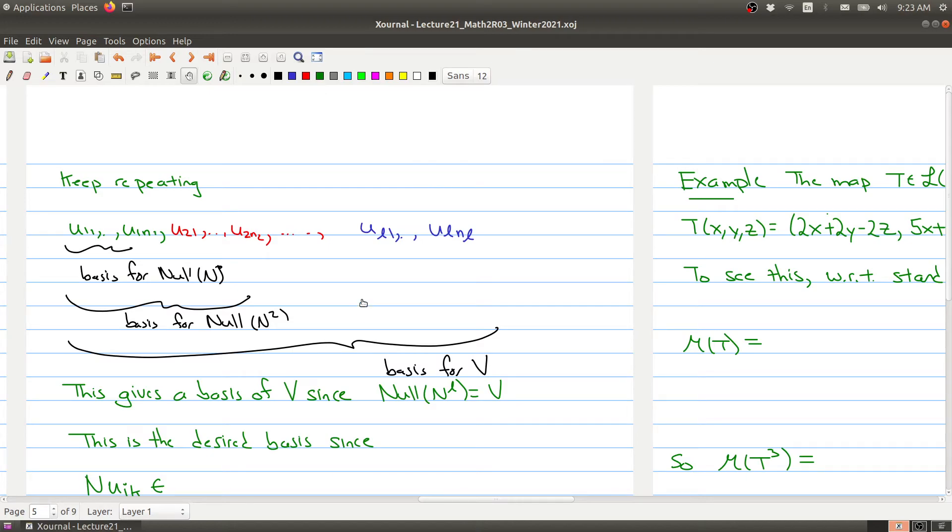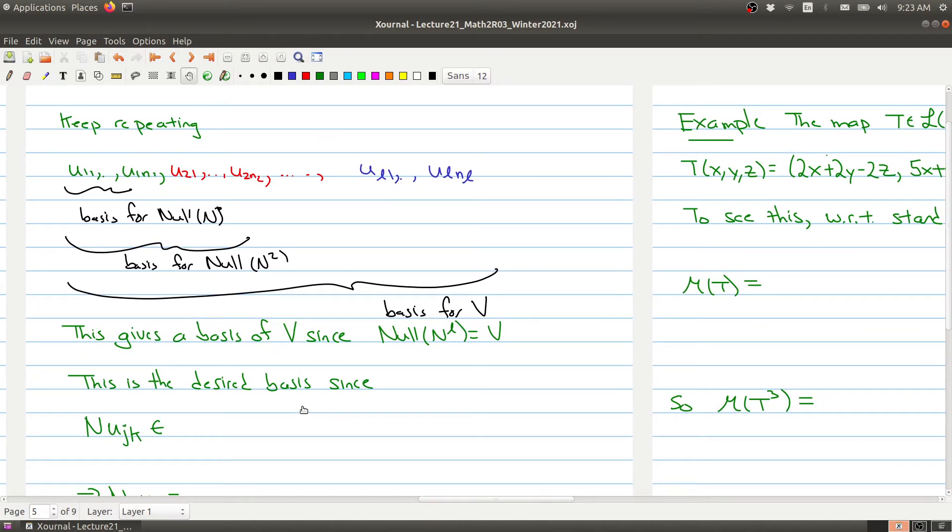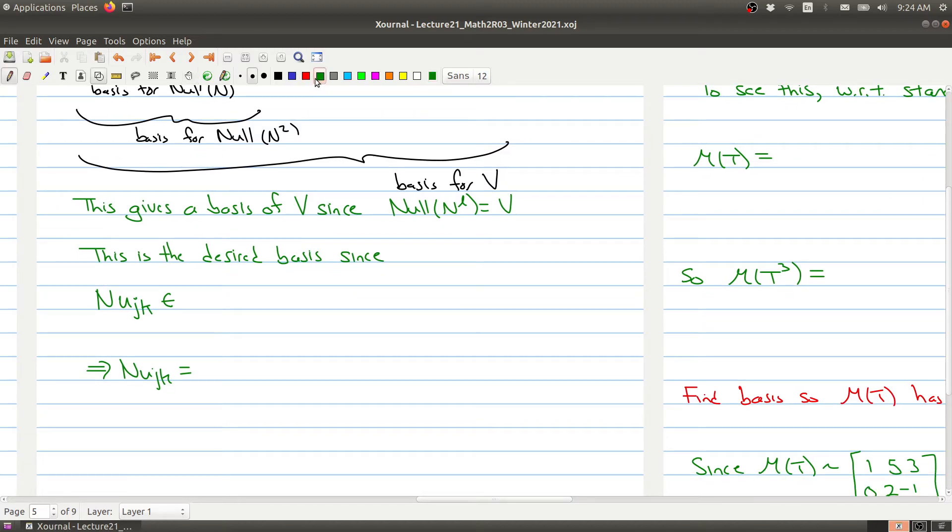This basis is the desired basis. If I apply N to any of the green ones, because these are a basis for null N, they all get sent to zero. If I apply the operator N to any of the red ones, it gets bumped down to the green ones because if I do it one more time I get sent to zero. This is the desired basis since when we apply the nilpotent operator to the basis elements coming from N to the j, this belongs in the null space of N to the j minus one.